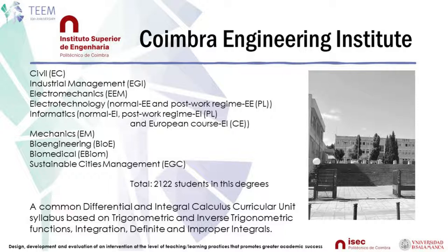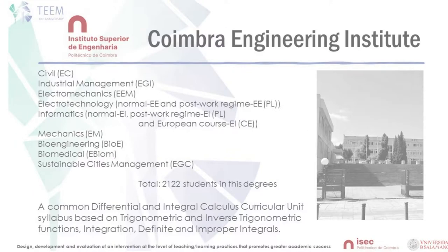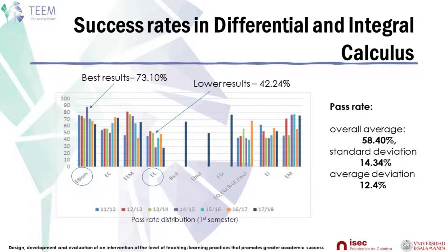The syllabus is based on trigonometric and inverse trigonometric functions, integration, and definite and improper integrals. In recent years, higher success rates in this unit have been observed in biomedical engineering, while the worst results occur in electrotechnical engineering. In the global assessment, the average approval rate stands at 58 percent.